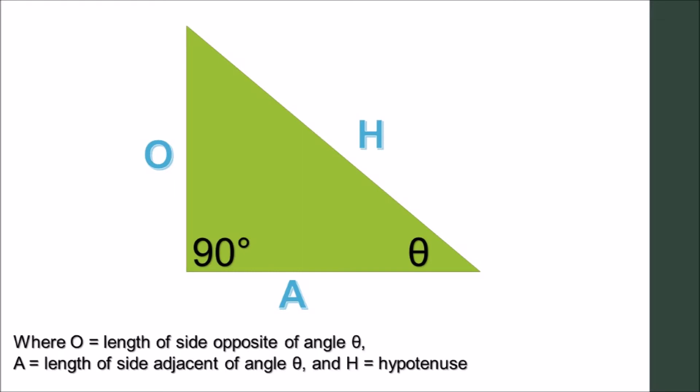Label the three sides. O represents the length of the side opposite of angle theta. A represents the length of the adjacent side of angle theta. And H is the hypotenuse.